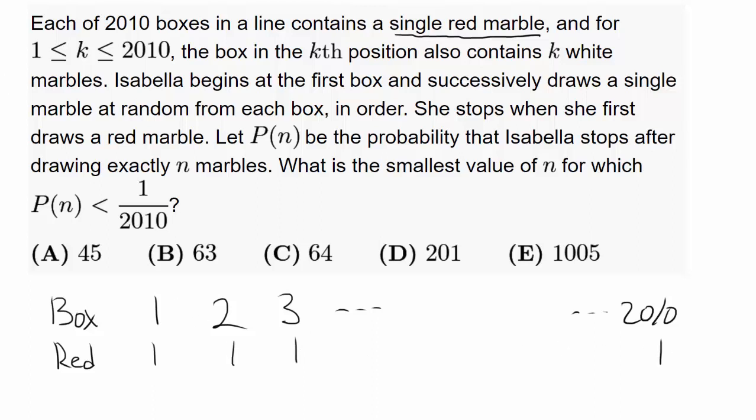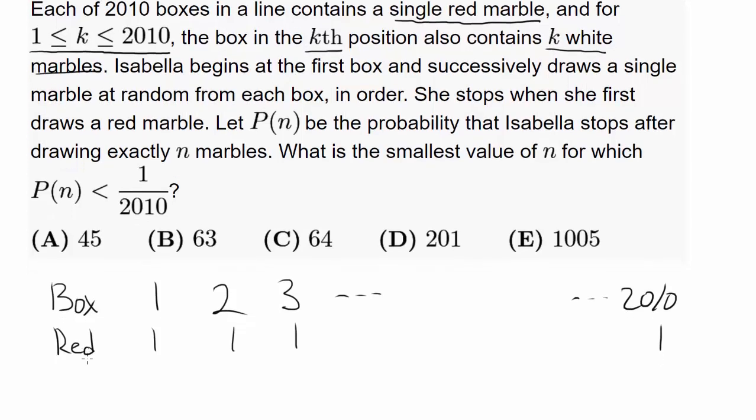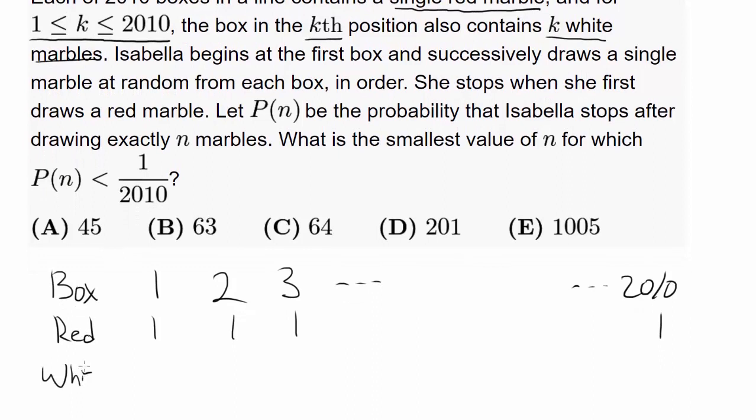Let's continue reading. For every single box between 1 and 2010, the box in the kth position also contains k white marbles. So the first box contains 1 white marble, second box contains 2, third box contains 3, all the way to 2010's box containing 2,010 white marbles.